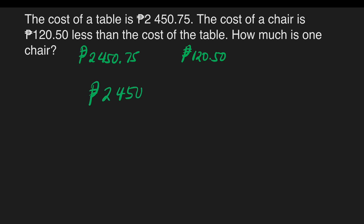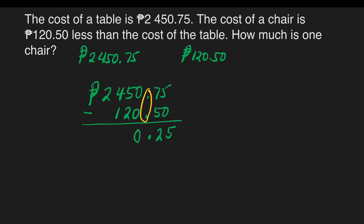We put 2,450 pesos and 75 centavos, then 120 pesos and 50 centavos. We have to make sure that the decimal points are aligned. Now let's start: 5 minus 0 is 5, 7 minus 5 is 2, copy the decimal point, 0 minus 0 is 0, 5 minus 2 is 3, 4 minus 1 is 3, and bring down 2.